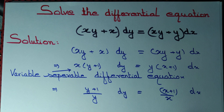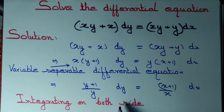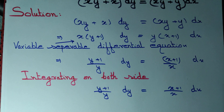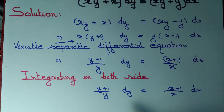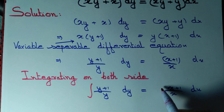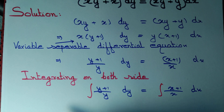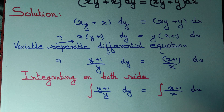Let's integrate both sides. So we are integrating on both sides — we copy the expression as it is and then integrate it. We integrate (y + 1) by y on the left and (x + 1) by x on the right.